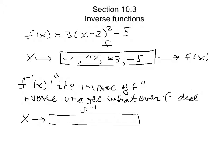The inverse is going to undo everything that f did. Instead of going in the original order, we go in reverse order and use the opposite of each operation. The very last thing f did was subtract 5, so the very first thing in the inverse is add 5. The next thing going right to left is multiply by 3, so instead we divide by 3. Then f raised to the second power, so the opposite is square root.